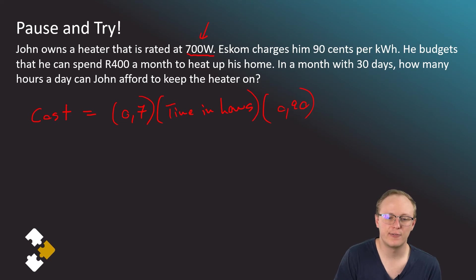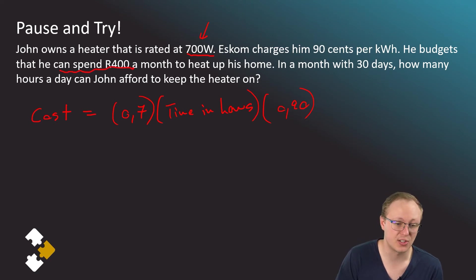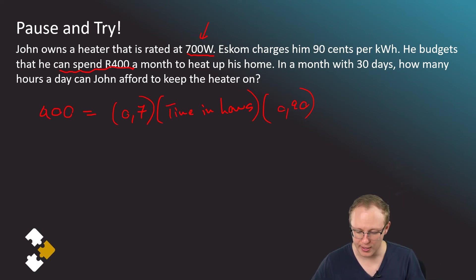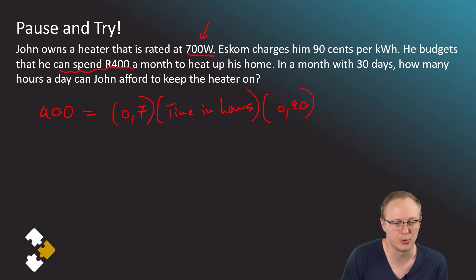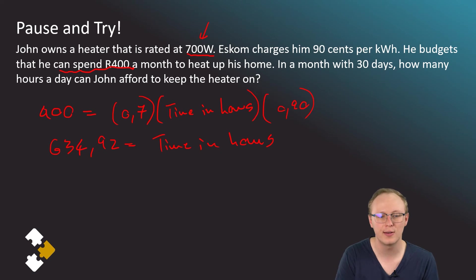We have two unknowns: time in hours and cost. Since John's budget is 400 rand, we substitute 400 in for cost. Dividing 400 by the product of 0.7 and 0.90 gives 634.92 hours — the total number of hours the heater can run over 30 days.